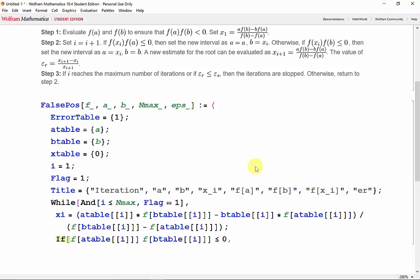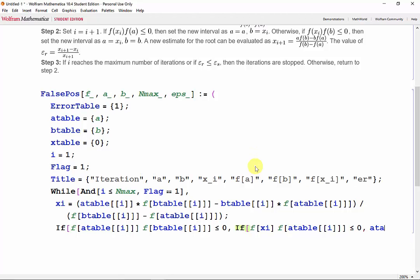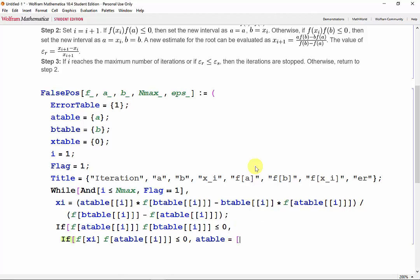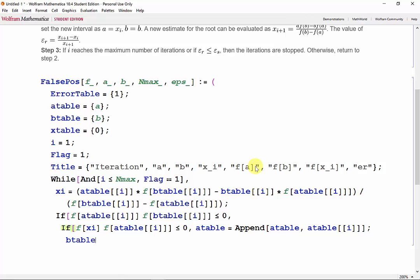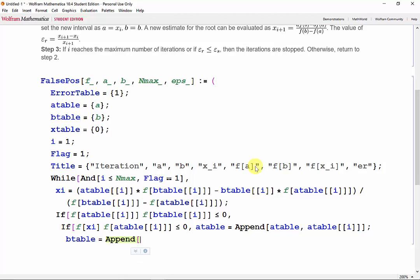If so, then check if f(xi) times f(atable[i]) is less than or equal to 0, and a is appended into atable and b becomes xi.